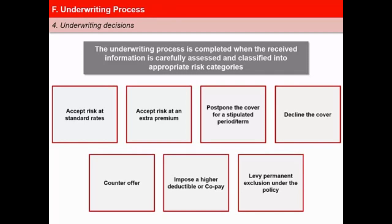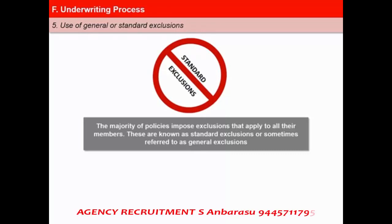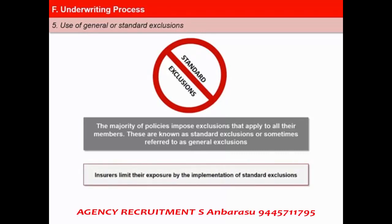If any illness is permanently excluded, it shall be endorsed on the policy certificate. This becomes an additional exclusion apart from the standard policy exclusion and shall form the part of the contract. The majority of the policies impose exclusions that apply to all their members. These are known as standard exclusions or sometimes referred to as general exclusions. Insurers limit their exposure by the implementation of standard exclusions.